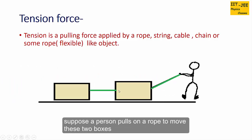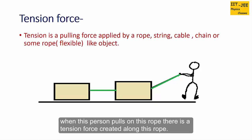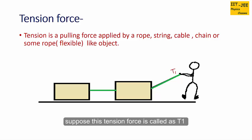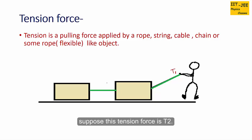Suppose a person pulls on a rope to move these two boxes. The person is pulling on this rope and these two boxes are connected with another rope. When this person pulls, there is a tension force T1 created along this rope. The same way, another tension force T2 will be created along the rope connecting these two boxes.